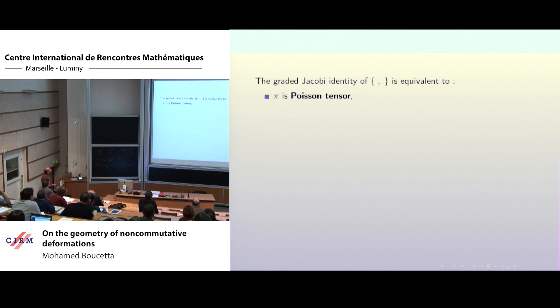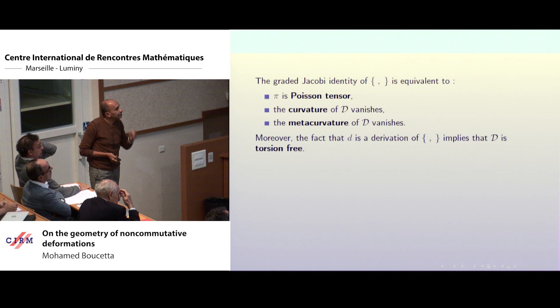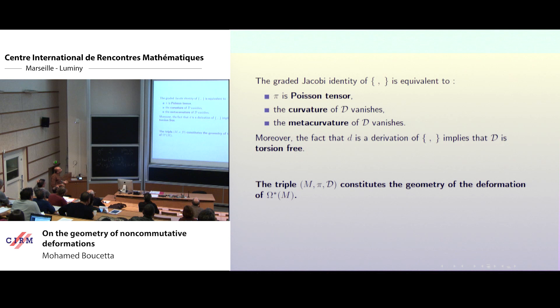So if you write the Jacobi identity, you get that P is a Poisson tensor and the curvature of D vanishes, and a new tensor — the metacurvature — also vanishes. The triple consisting of the manifold, the bivector field, and the connection constitutes what is the geometry of the deformation. So the deformation gives you a Poisson tensor P and a contravariant connection D with these curvature conditions.